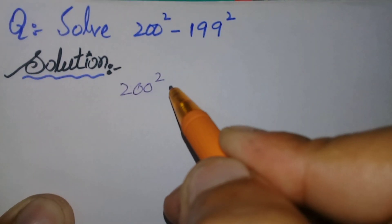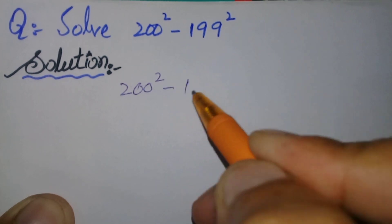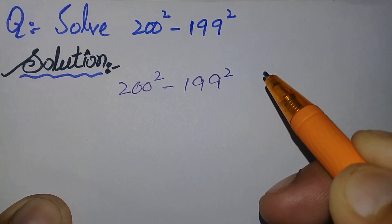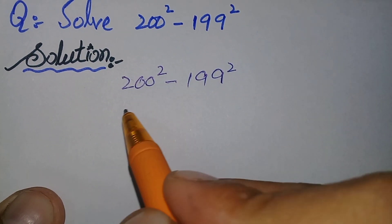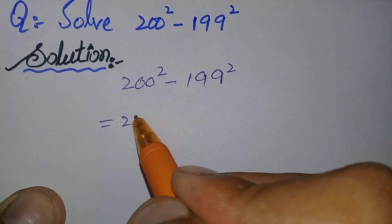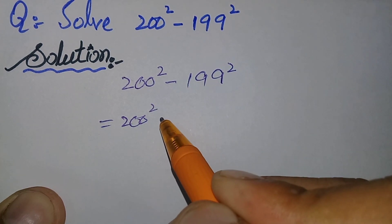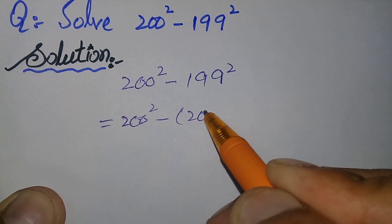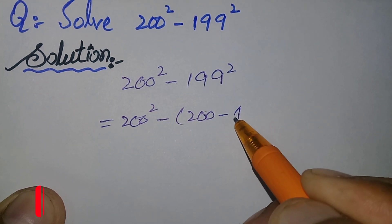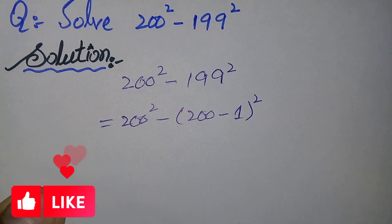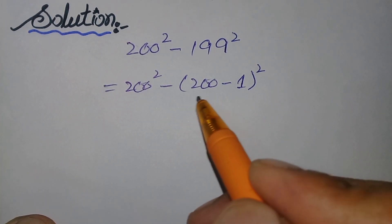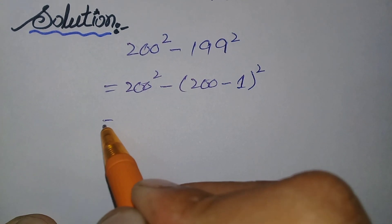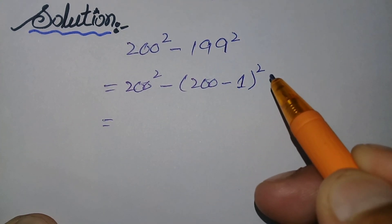The question is 200 raised to the power 2 minus 199 raised to the power 2. In the next step, 200 power 2 will remain the same, and we can write 199 as (200 minus 1) whole square. Here we will use an algebraic identity: a minus b whole square is equal to a square minus 2ab plus b square.